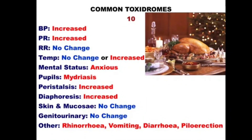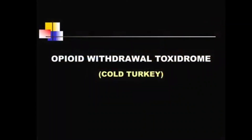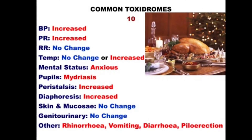Toxidrome number ten features an image of a turkey — associated with Thanksgiving or Christmas dinner. In slang, this clinical picture is called 'cold turkey,' referring to heroin (opioid) withdrawal. The important manifestations of withdrawal from opioid addiction include piloerection, which gives rise to the slang term — the skin has a puckered appearance resembling frozen meat taken from a freezer. This is the opioid withdrawal toxidrome.